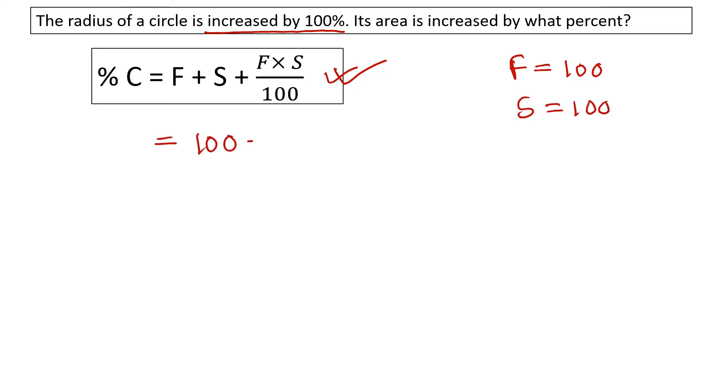100 plus 100 plus 100 into 100 divided by 100. It will be calculated by 300 percent. It is a positive one, 300 percent increased.